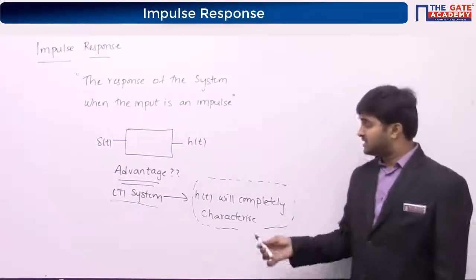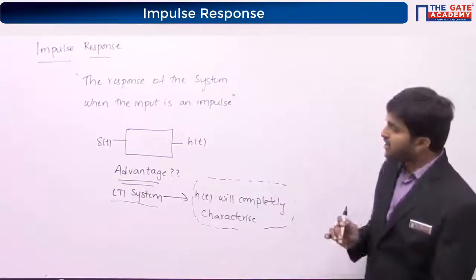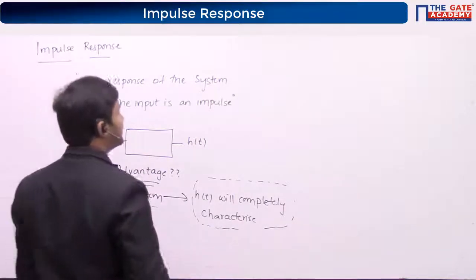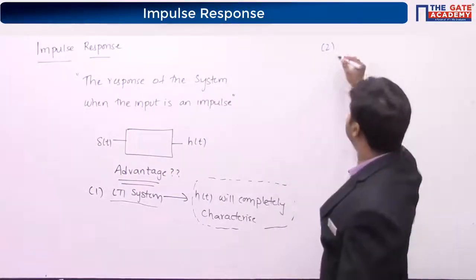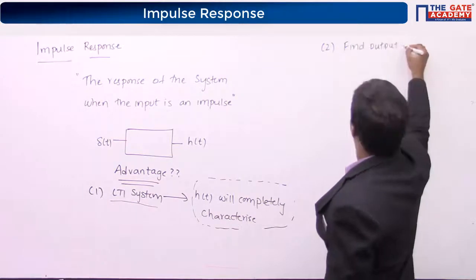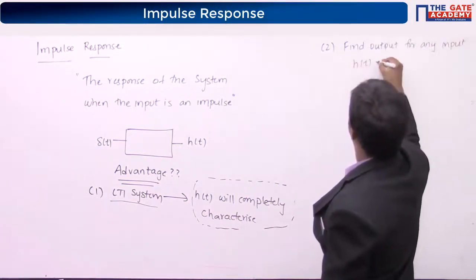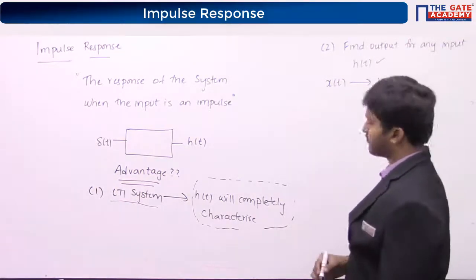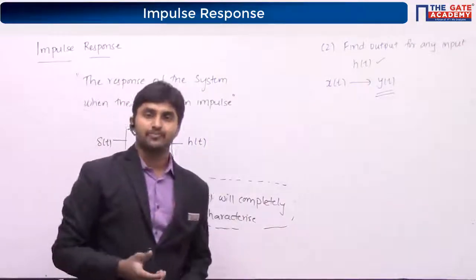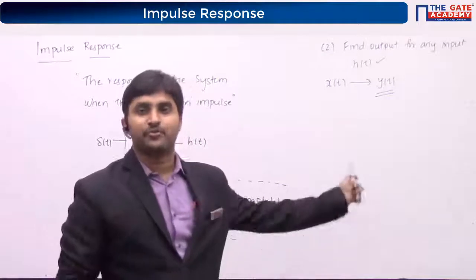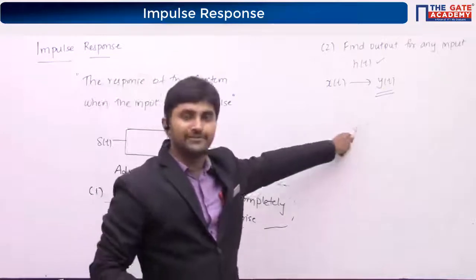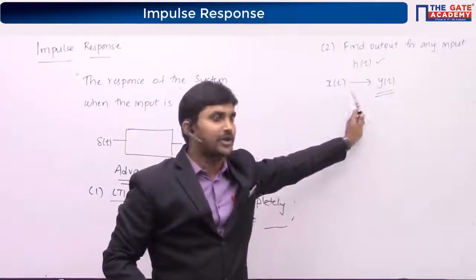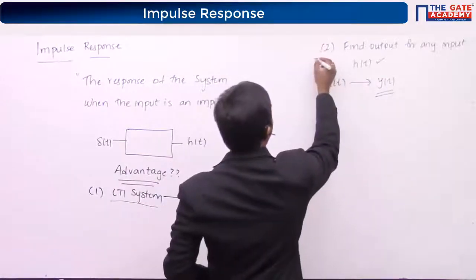If a system is non-LTI, then h(t) is not sufficient to completely characterize the system. But if the system is an LTI system, then we can completely characterize it. The second important point of having an LTI system is finding the output for any input. For example, if you know h(t) and you know x(t), you can easily tell what is y(t). Once you know the impulse response, you can easily compute the output of the system for any given input x(t). That is a very big advantage when the system is an LTI system.